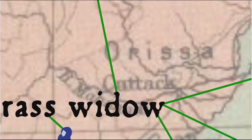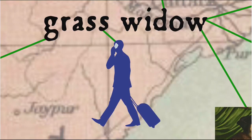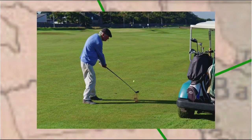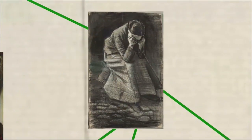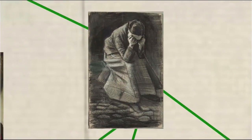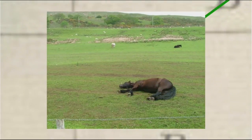By the 20th century the expression 'grass widow' meant a married woman whose husband is away often or for a prolonged period, for instance on business trips or because he's away playing golf a lot. However, when the expression was first used by Sir Thomas More in the early 16th century it had quite a different meaning, referring to a discarded mistress or unmarried woman who has cohabited with one or more men. This original sense might have something to do with the discarded mistress being put out to grass, as it were.